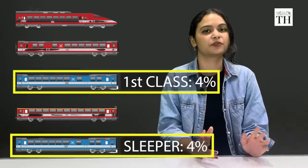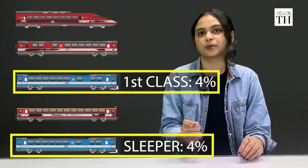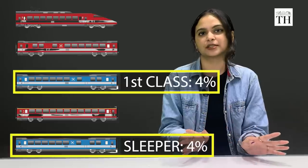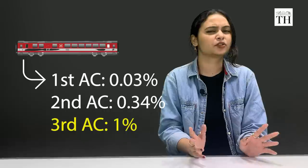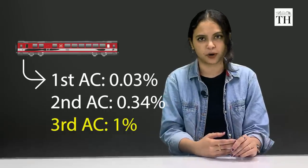The sleeper and first class carries just 4% of the total passengers each, and third AC carries 1%. And the rest of the coaches make up an even smaller part of that.